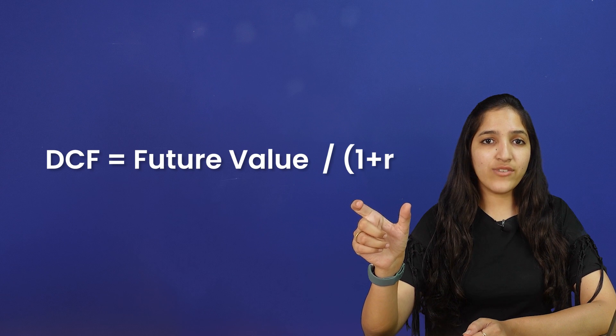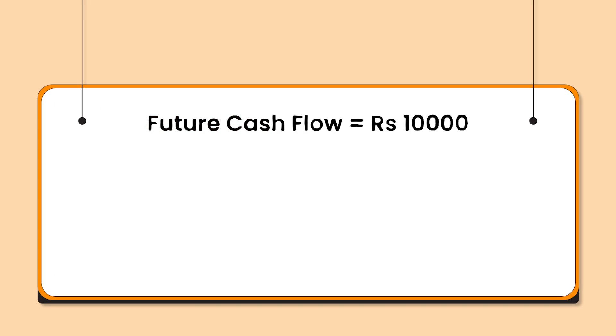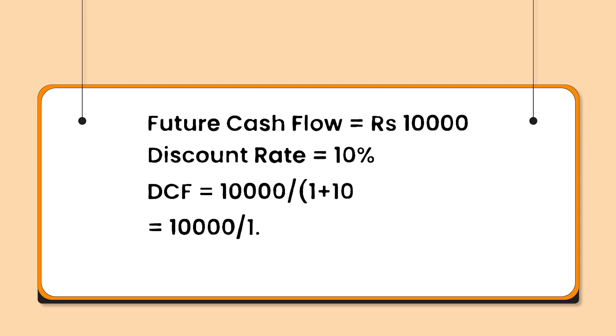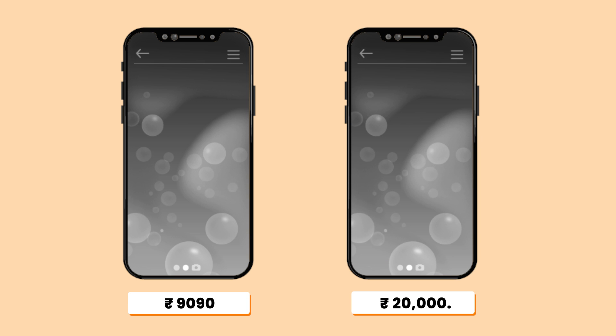Putting it all together, the formula for Discounted Cash Flow is simply the future cash flow value divided by 1 plus the discount rate. Now let's estimate the phone's present value. The future cash flow, in this case, is the 10,000 rupees you expect to get after a year. The discount rate — let's say it's 10%, considering the phone might depreciate quickly. So the phone's present value comes out to around 9,090 rupees. This suggests its actual worth is closer to 9,000 rupees than the 20,000 rupees price tag.